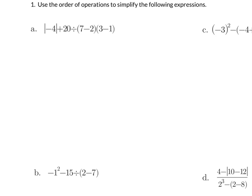To start off with, we want to simplify inside parentheses. I'm going to leave the absolute value alone for now. 7 minus 2 is 5 and 3 minus 1 is 2.